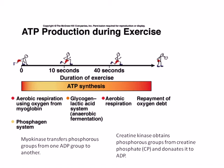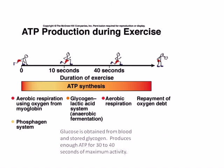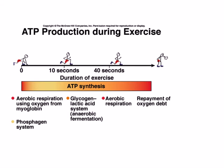However, after 30 to 40 seconds of continual maximum contraction, the contraction begins to compress the blood vessels, thereby decreasing the delivery of oxygen to the cell. At this point, the muscle relies more on the anaerobic process for the production of ATP. The compromise to circulation as a result of the maximal muscle contraction also inhibits the ability of the muscle to remove the buildup of lactic acid, leading to the feeling of muscle soreness.